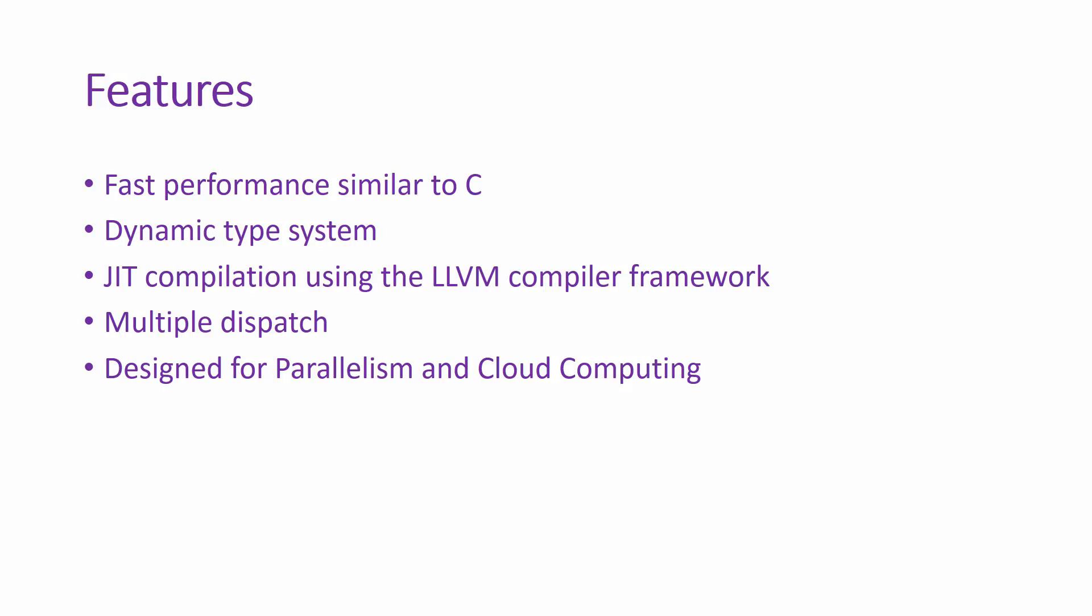Julia comes with all these features. I have listed only a few, it has many more features. But just to quickly go over these features: number one selling point for Julia is the performance similar to C. It has a very sophisticated dynamic type system as well, so your productivity is still as high as Python. It uses JIT compilation using LLVM compiler framework and that's one of the reason why it is very fast. Other than that it supports multiple dispatch and it is designed for parallelism and cloud computing.